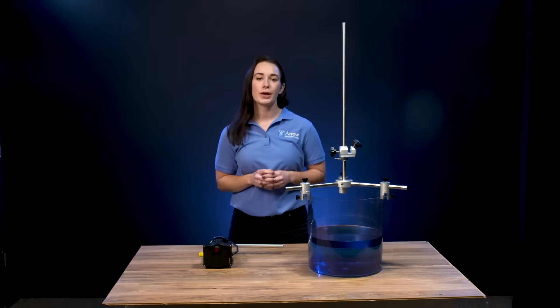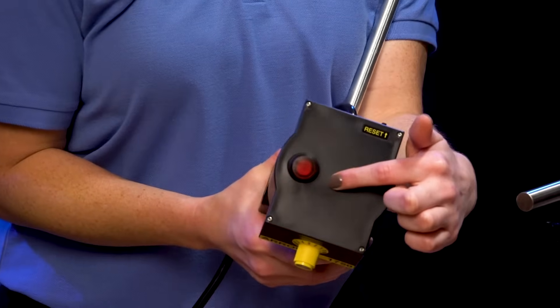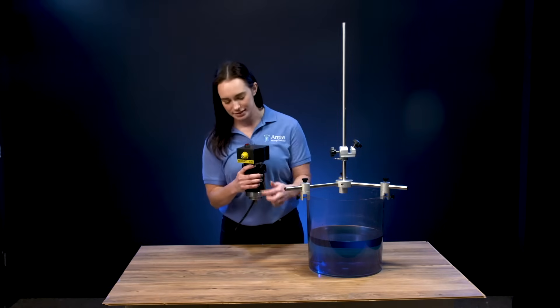Before attaching the stirrer, make sure the on-off switch at the top is angled toward the front. This indicates that it's in the off position. Also, make sure that the yellow speed dial is at its lowest setting.